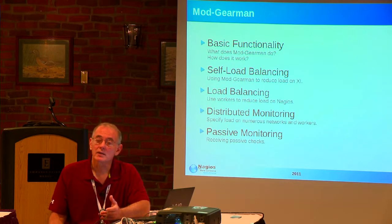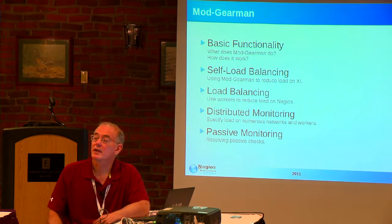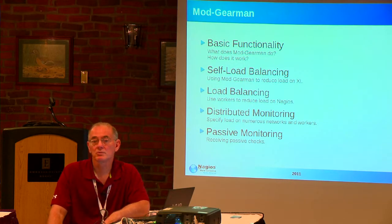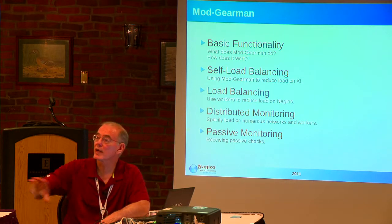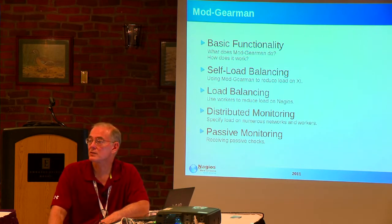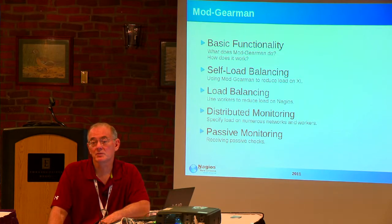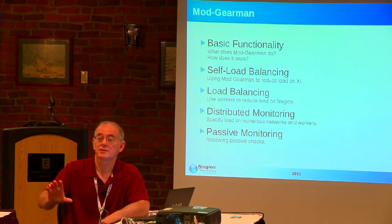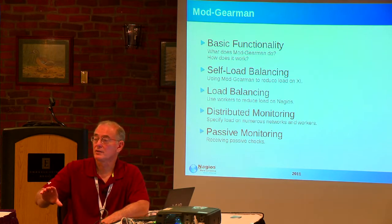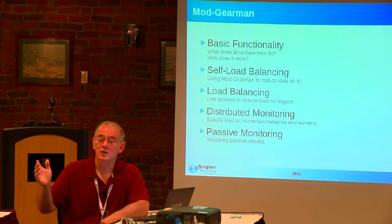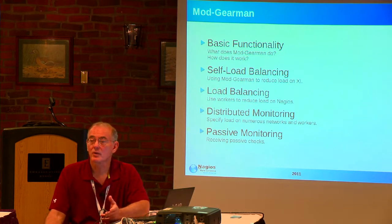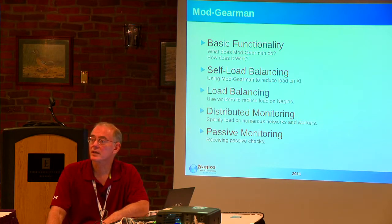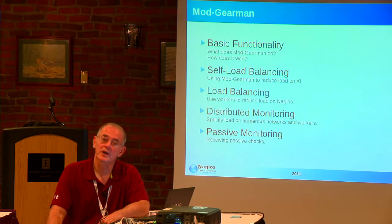Load balancing: set up the server on your Nagios box and then put the workers all over the place, exchanging that load out to those workers to cut the load on your Nagios server. That process is pretty easy to do. One of the great things about Mod Gearman is everybody has some piece of hardware just sitting in a rack doing nothing. You can throw Linux on it, put a worker on it, and presto — you can use that old hardware to help alleviate the load off your Nagios box.